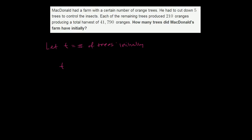So he starts off with t trees. But then they tell us that he has to cut down five trees to control the insects. So how many trees would he have after that? Well, he started with t, and he had to cut down five. So he's going to have t minus five trees now.